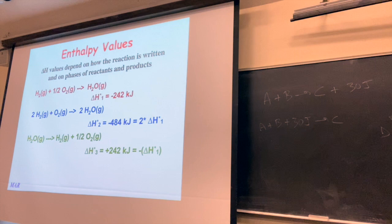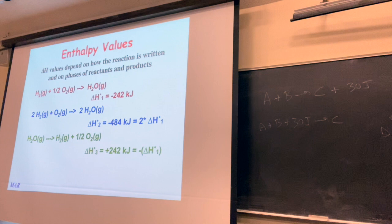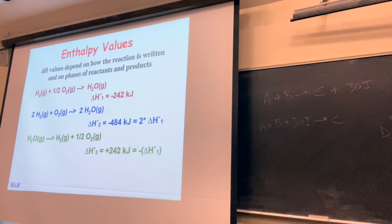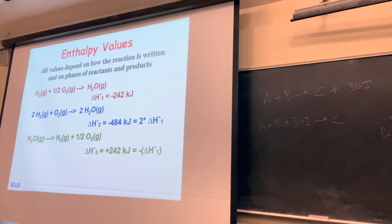Another thing you can do is flip reactions around. Instead of having hydrogen and oxygen as reactants and water vapor as the product, you can think of water vapor as the reactant and hydrogen and oxygen as the products. If you flip the equation, you change the sign. What was very exothermic becomes very endothermic — the reaction that gives off lots of energy now takes a lot of energy.